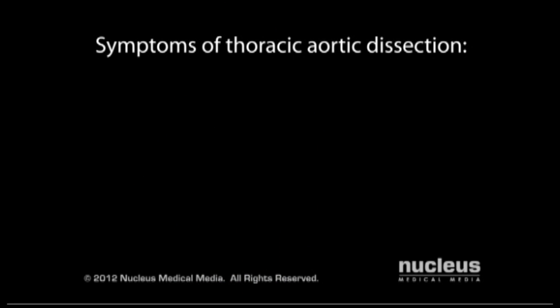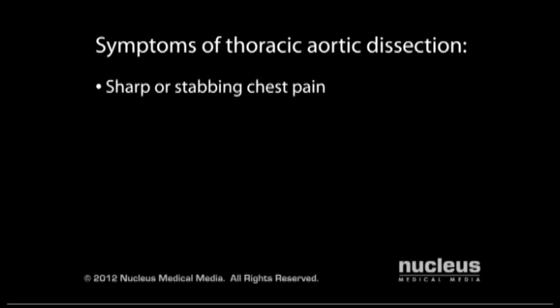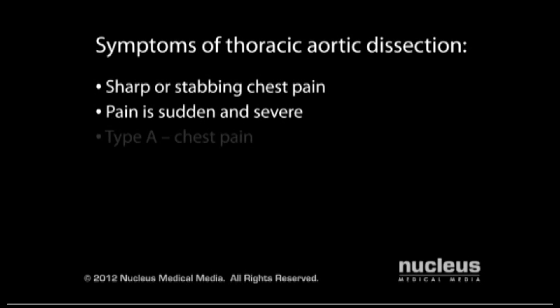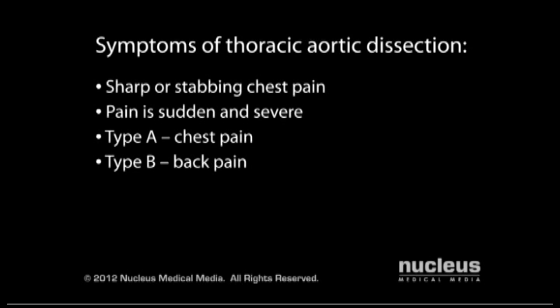The most common symptom of thoracic aortic dissection is sharp or stabbing chest pain, usually sudden and severe. If you have a type A dissection, you are most likely to feel pain in your chest. If you have a type B dissection, you are more likely to feel pain in your back than your chest. If you have these symptoms, you should seek immediate medical attention, as this condition can be life-threatening.